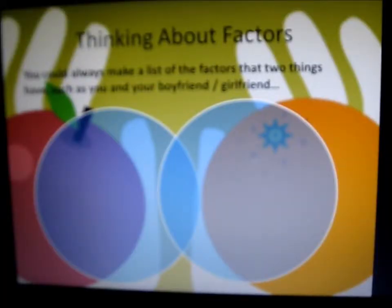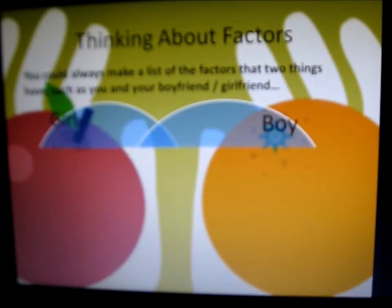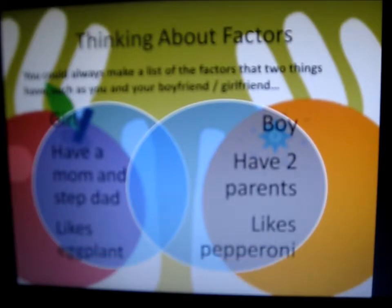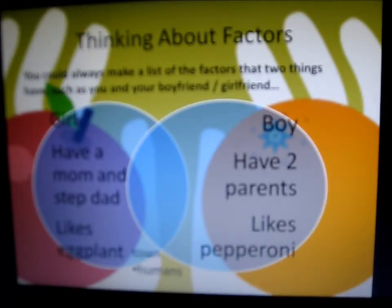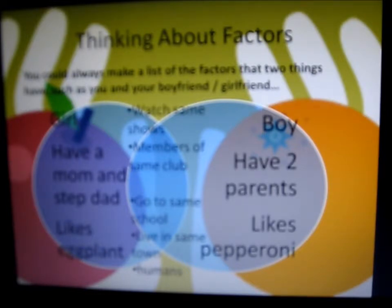Thinking about factors, you could always make a list of the factors that two things have in common — such as you and your boyfriend or girlfriend. One is a girl, the other is a boy; one has a mom and stepdad, the other has two parents; one likes to eat eggplant, the other likes pepperoni. But the important part is what comes in the middle: you're both humans, you could live in the same town, go to the same school, be members of the same club, and watch the same TV shows. These are all important when talking about how you relate to one another and what you have in common.